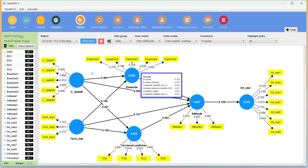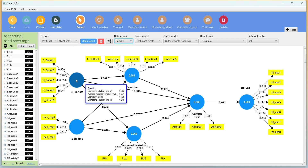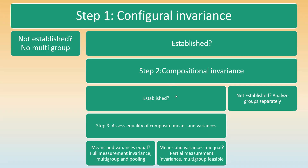Step 3 is equality of composite means and variances: ensuring that the means and variances of the composites are similar across groups. If Step 3 is not fulfilled, we can still compare the groups separately but cannot pool the data. If compositional invariance (Step 2) is not established, we can only analyze groups separately. If Step 2 is established but Step 3 is not, we can still test multigroup differences but cannot pool data. If both are fulfilled, we can perform full multigroup analysis with data pooling.